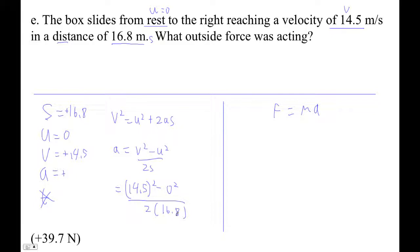Let's try this. 14.5 squared divided by 2 divided by 16.8 equals 6.2574 meters per second squared.